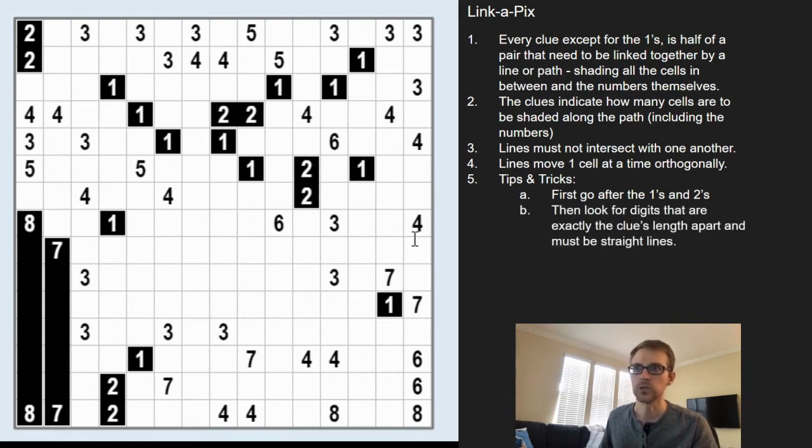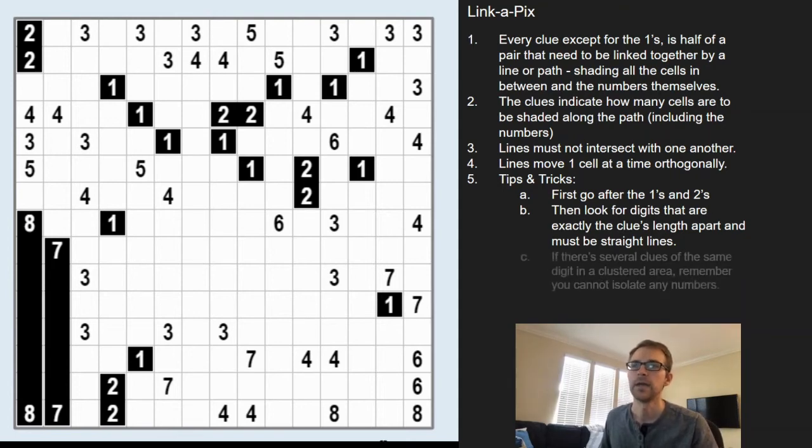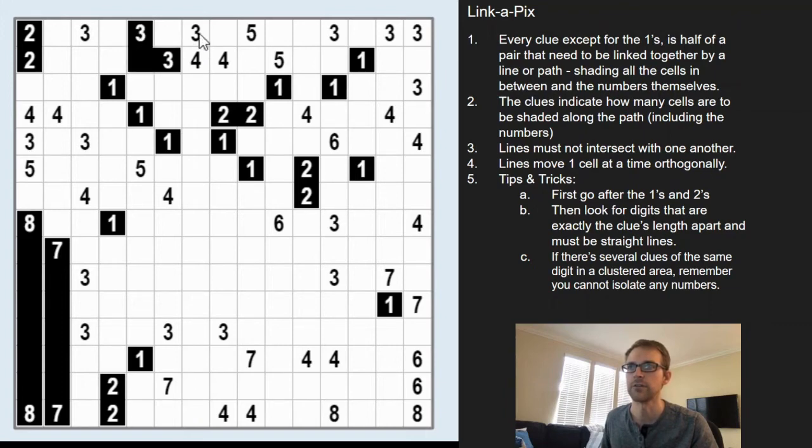So we can see, I think that's it for the ones and twos. If we look at the threes, some of them are exactly three cells apart, and so that's gonna be real easy. And when you look at a clustered area, you can't isolate any of the numbers. So this area here, there's four threes.